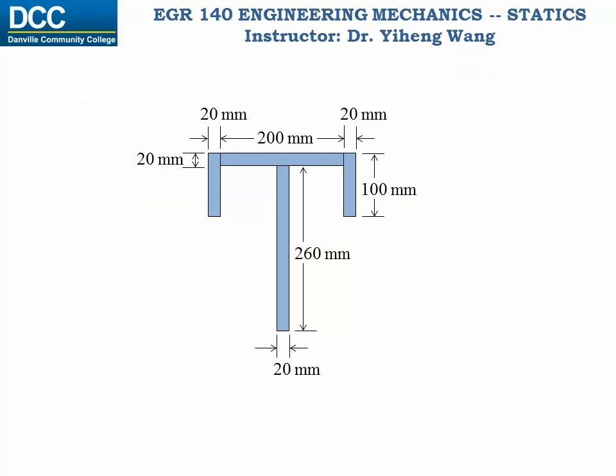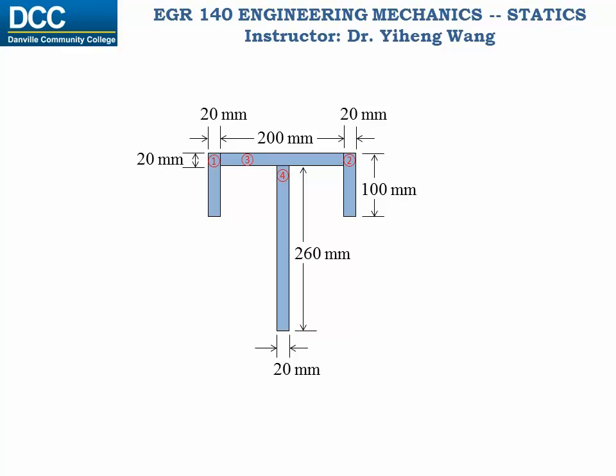The very first step is to define our component areas. Sometimes there are multiple ways to do it, but for this example it is quite obvious that we want to choose these four rectangles to be the component areas. If you recall what I said before about finding centroid location, location is always described in relation to some reference. So the second step is to choose a reference line. I always just choose the bottom of this shape to be the reference line, where the vertical coordinate y equals zero.